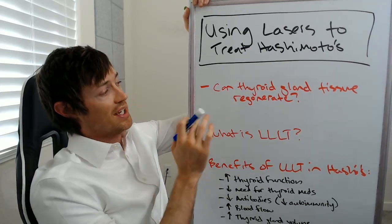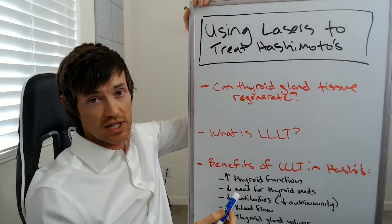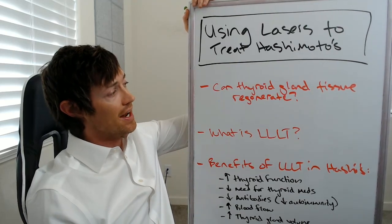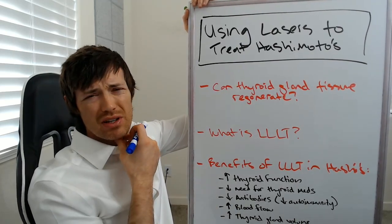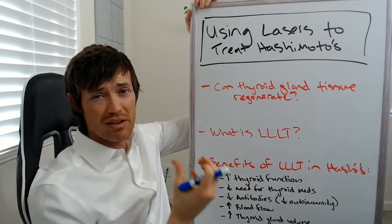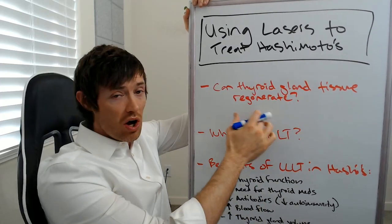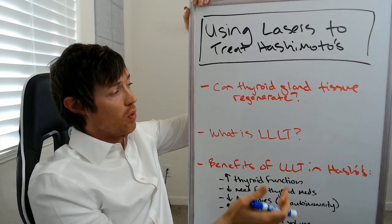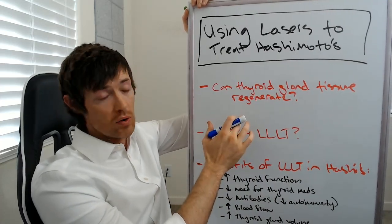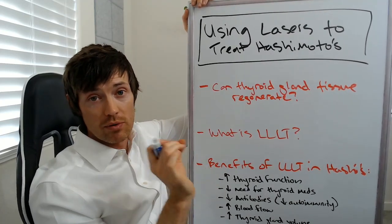First, I want to answer this question: can thyroid gland tissue regenerate? A lot of people ask me — they've had their thyroid removed, had a portion cut out, had Hashimoto's for 30 years and their tissue is dead or irradiated — and they want to know if their tissue can regenerate. The answer to almost all of those is no. Right now, there's no way to regenerate completely dead thyroid gland cells or thyroid gland tissue.